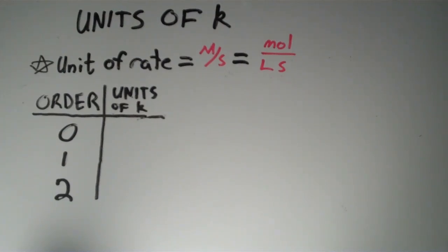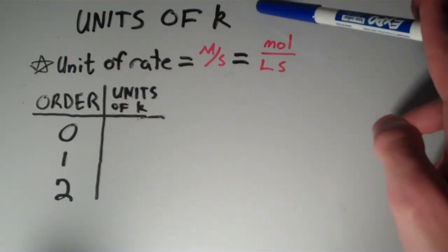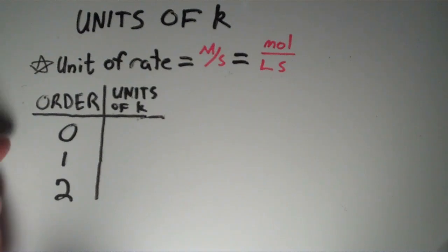In this video I'm going to show you how to find the units of K, the rate constant, for zero-order, first-order, and second-order reactions.